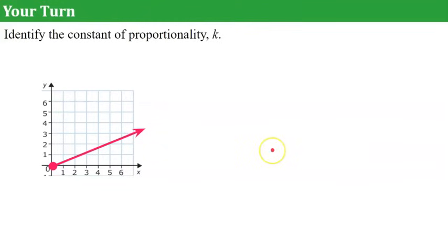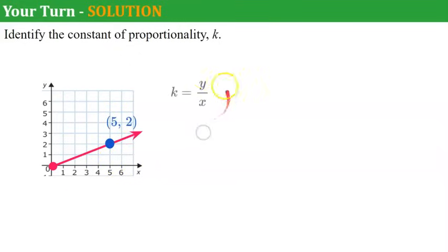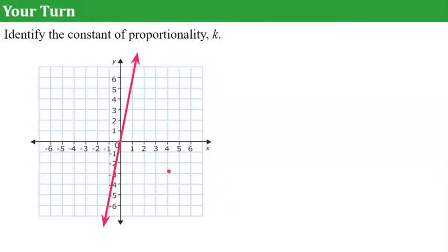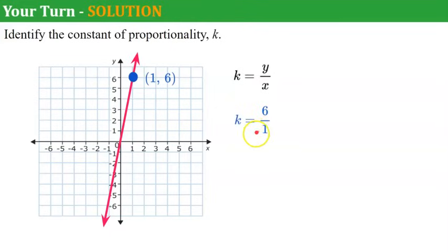Now it's your turn — pause the video and identify the constant of proportionality. Welcome back. I picked the ordered pair (5, 2). Our ratio is y to x: y is 2 and x is 5, so the constant of proportionality k is 2/5. Your turn again — please pause and find the constant of proportionality. Welcome back. The ordered pair I picked was (1, 6). Our ratio y to x: y is 6, x is 1, which simplifies to 6, giving us a constant of proportionality of 6.